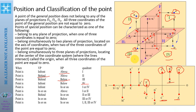Point F is on the horizontal plane but behind the vertical (frontal) plane. When the horizontal plane is rotated, its horizontal projection is placed above the X-zero axis (F1), and its frontal projection lies on the X-zero axis.